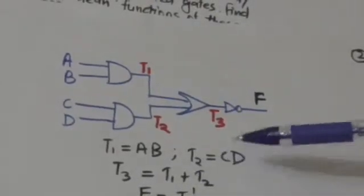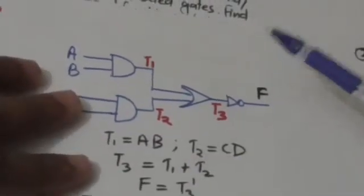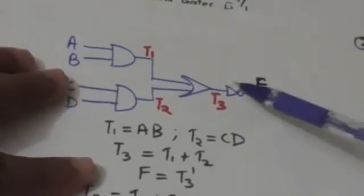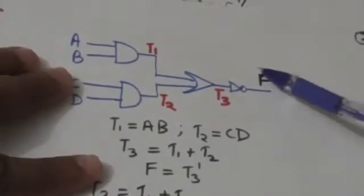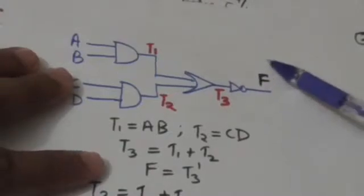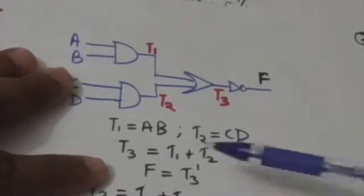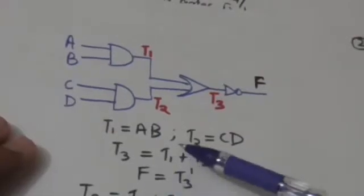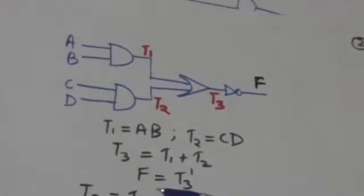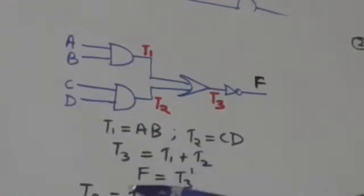The boolean function for T3 is: T3 equals T1 plus T2. The output of this NOT gate is labeled by F, which is the output variable. So F equals the complement of T3.